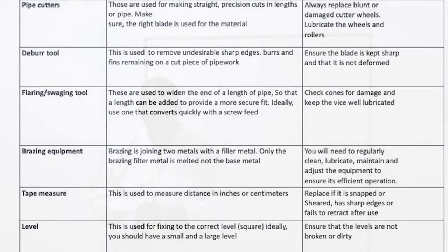Pipe cutters, sometimes called tube cutters, are used for cutting copper tubes. They are used for making straight precision cuts in length of pipe. Make sure the right blade is used for the right material; always replace blunt or damaged cutter wheels and lubricate the wheels and rollers. The ball tool is used for deburring — that is, removing chips at the cut ends — because those chips can be very sharp, could cut you, or if they fall into the tube they can flow along with the refrigerant and tend to block the capillary tube or the expansion valve.